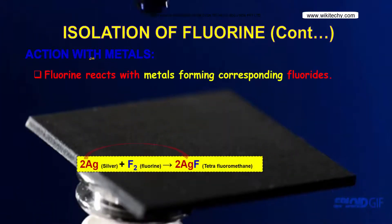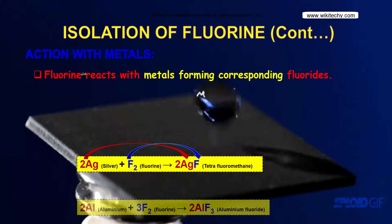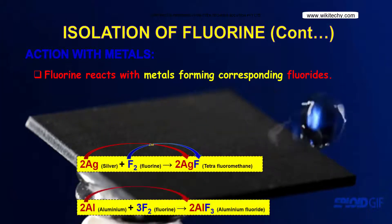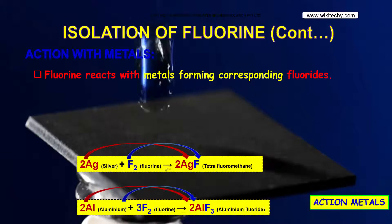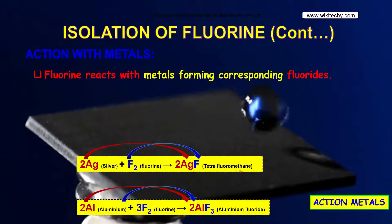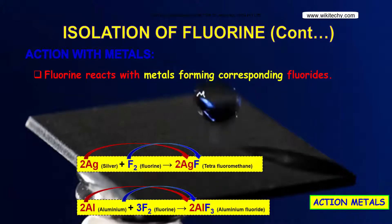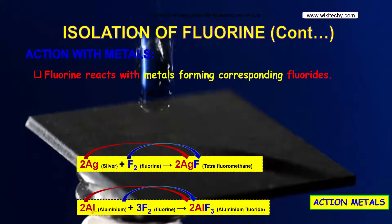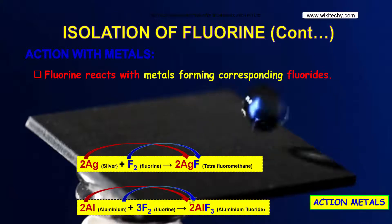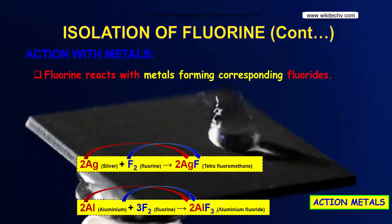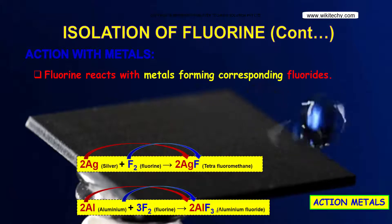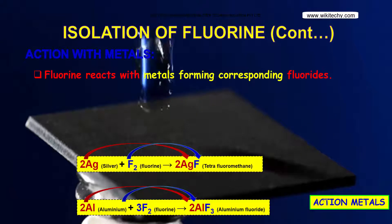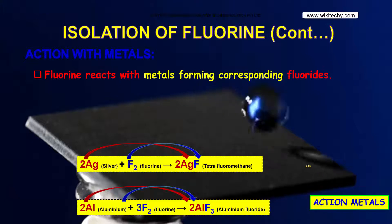Action with Metals: Fluorine reacts with metals forming corresponding fluorides. Silver with Fluorine gives Silver Fluoride, and Aluminium with Fluorine gives Aluminium Fluoride.